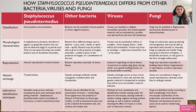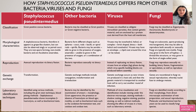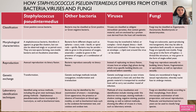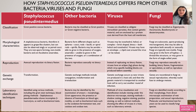Staphylococcus pseudintermedius differs from other bacteria, viruses, and fungi in its classification, in that it is classified as a gram-positive coccus bacteria. It also differs in morphology because Staphylococcus bacteria appear as grape-like clusters, but can also be observed singly or as paired cocci. They are non-spore forming and non-motile bacteria, and are facultative anaerobes.